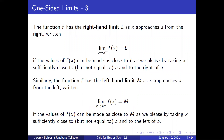The function f has the right-hand limit L as x approaches A from the right, written: the limit as x approaches A from the right of f(x) equals L, if the values of f(x) can be made as close to L as we please by taking x sufficiently close to but not equal to A and to the right of A. Similarly, the function f has the left-hand limit M as x approaches A from the left, written: the limit as x approaches A from below of f(x) equals M, if the value of f(x) can be made as close to M as we please by taking x sufficiently close to but not equal to A and to the left of A.